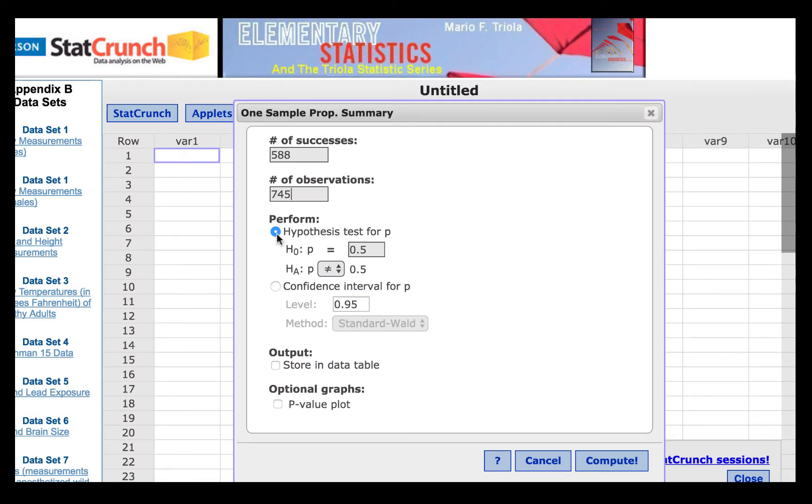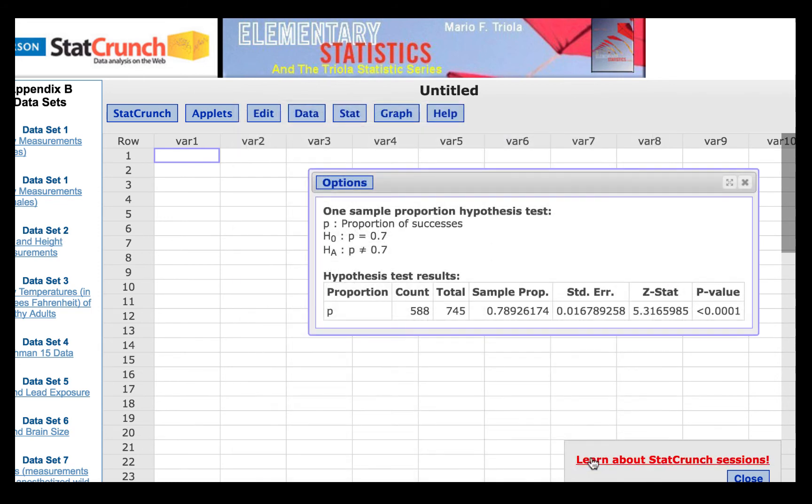We are told to perform a hypothesis test, and the hypothesized proportion is 0.7. It's a two-tail test, so we'll leave the symbol in the alternative hypothesis at not equal to. Click Compute, and the Z-stat that we are given is 5.32 if we round to two decimal places.